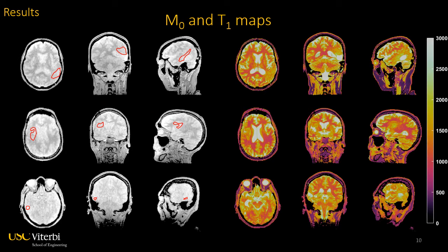Results from three representative patients at the first time point are shown here. M0 maps are shown on the left, on which tumor ROIs were delineated by red contours, and T1 maps are shown on the right. All maps are volumetric. T1 mean within tumor ROIs is longer than contralateral white matter in all three cases. The evidence of craniotomy is pointed by green arrows, and the location of surgical cavities and extra-axial fluid collections are pointed by blue arrows.